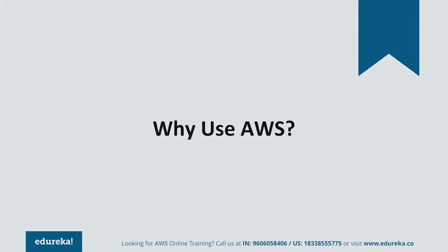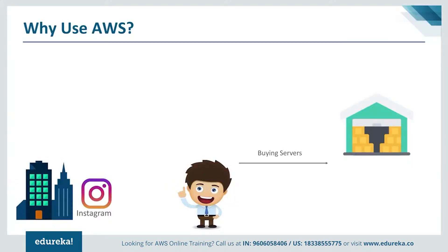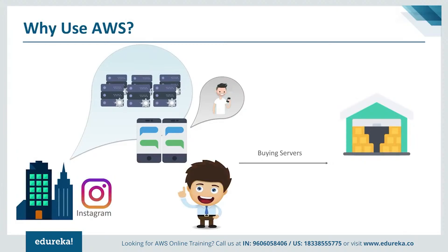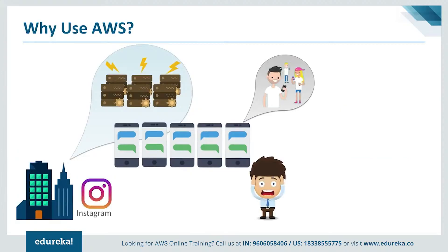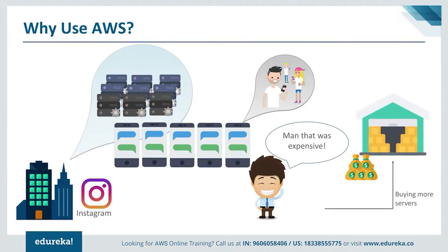Let's take an example. Say you think of starting a business and your business is Instagram. You launch the Instagram application and you have to make it available to the world. The first thing you have to do is invest some money, buy some servers, and upload your application on it. You start with a small user base, but overnight your application becomes so viral that millions of users are trying to access it. The servers become overburdened, so you invest more money, buy more servers, and the situation seems a little normal.